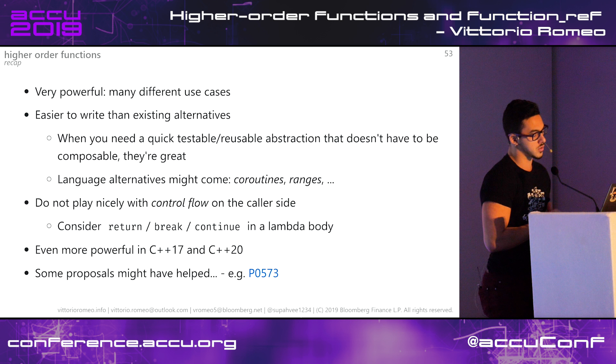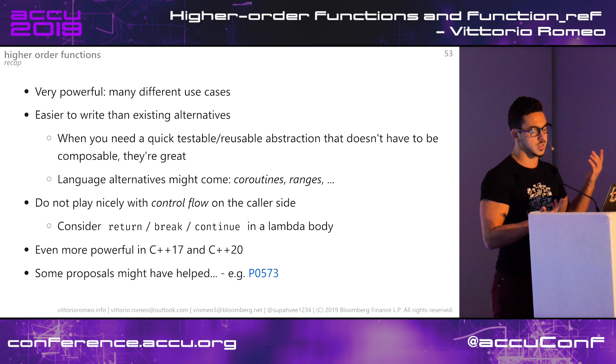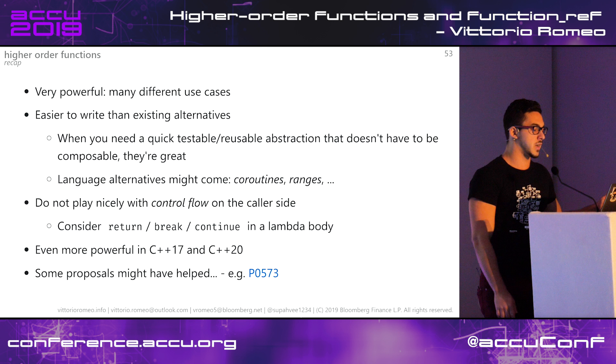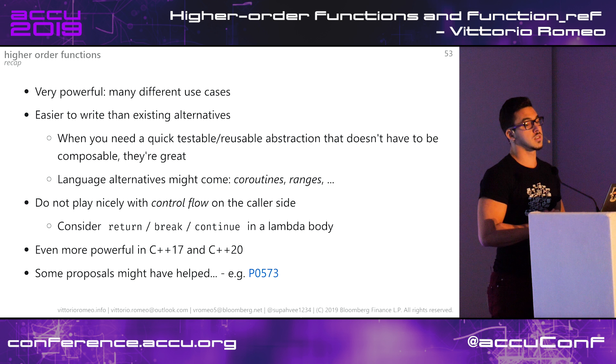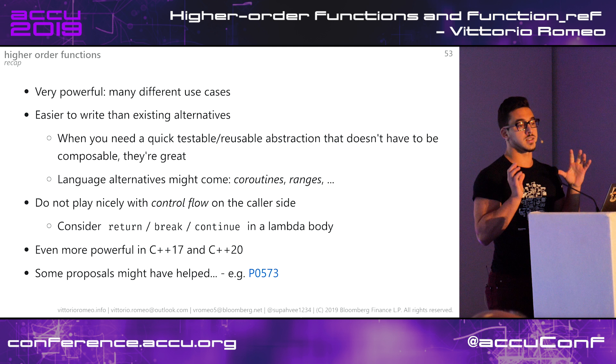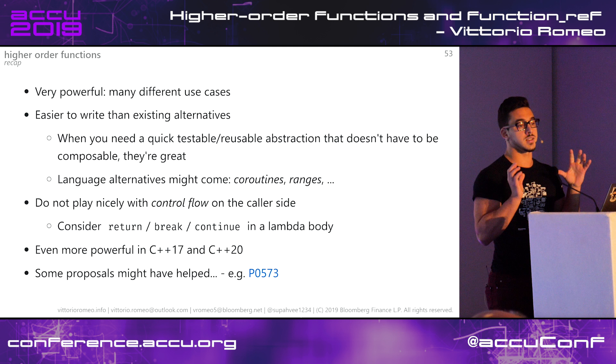Higher-order functions do not play nicely with control flow on the caller side - using return, break, or continue in a lambda body is not trivial, and returning from the outer function from a lambda is not easy. You can hack these in with special return values that propagate the intention, but then the implementation becomes complicated and you lose the benefit of a simple implementation. They are even more powerful in C++17 and C++20: in 17 we got constexpr lambdas, in 20 we got templated lambdas. There are proposals that might make them even better, like the terse lambda proposal by Barry Revzin, which had a nice syntax for small lambdas but got rejected.